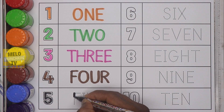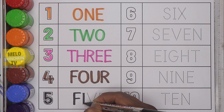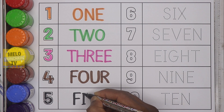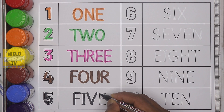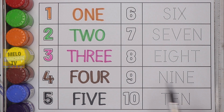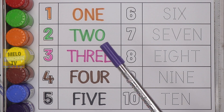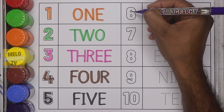Next, I'll choose black color and write number five. This is number five and the spelling is F-I-V-E, five.